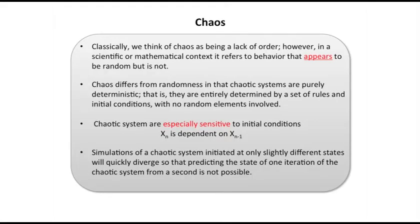I want to step back and come back to fractal analysis in terms of the mathematical equation. Fractal analysis actually sits under the umbrella of chaos theory, and chaos is not what we think of as a lack of order. In mathematical terms, it really describes behavior that appears to be random but is not. Chaos differs from randomness in that chaotic systems are purely deterministic — entirely determined by a set of rules.